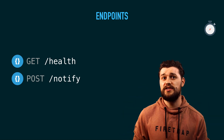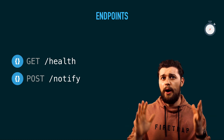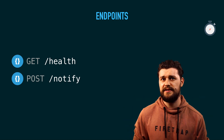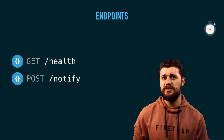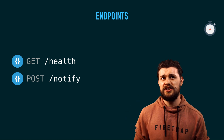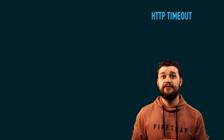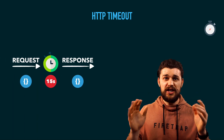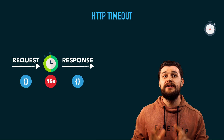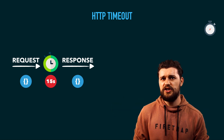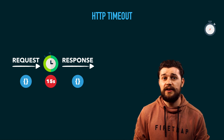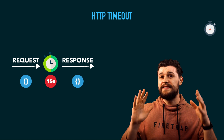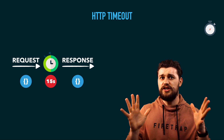The first endpoint is health, which tells the client whether our Notify service is up and running by responding with a 200 status — meaning success. The second endpoint is slash notify, which gives us an OS notification so we can mark it as completed or delayed for a certain period of time. After the Notify service sends an OS notification, the HTTP server will wait for us to respond — and that wait period is about 15 seconds, which is the HTTP timeout.